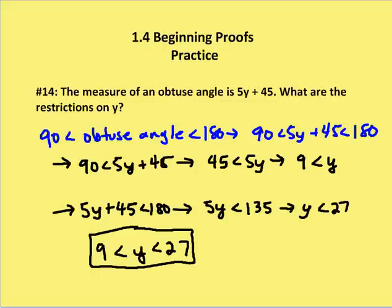So in question number 14, we're told that the measure of an obtuse angle is 5y plus 45. We're trying to figure out what the restrictions are on y. Well, we know that an obtuse angle is going to be greater than 90 and less than 180 degrees.